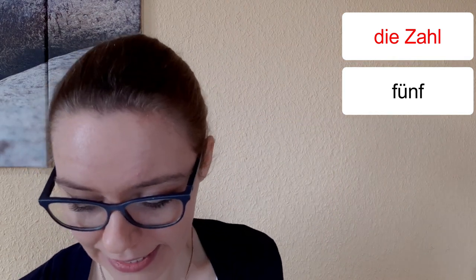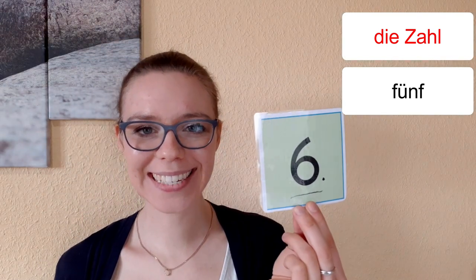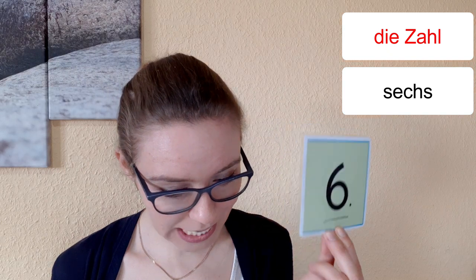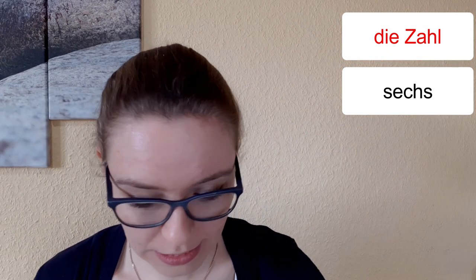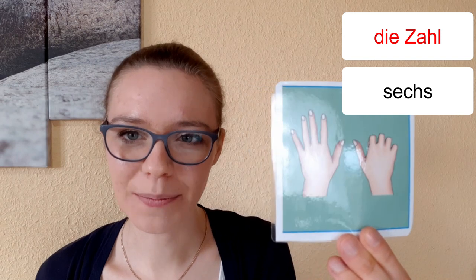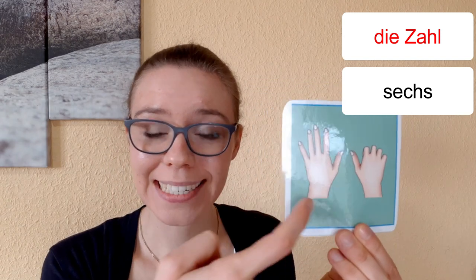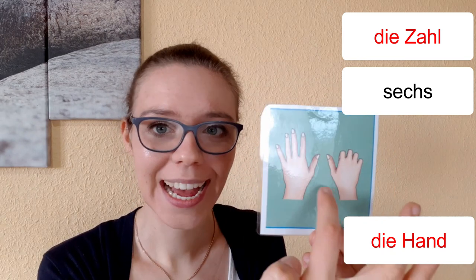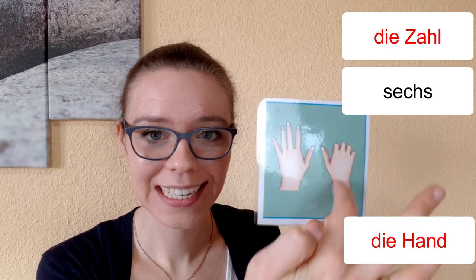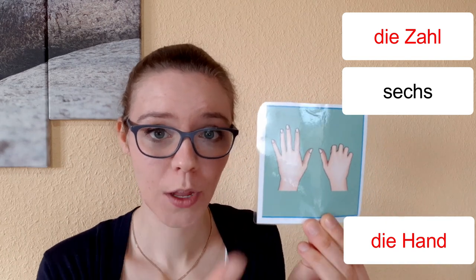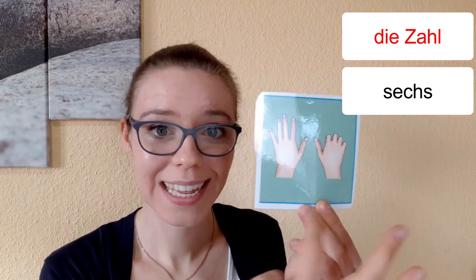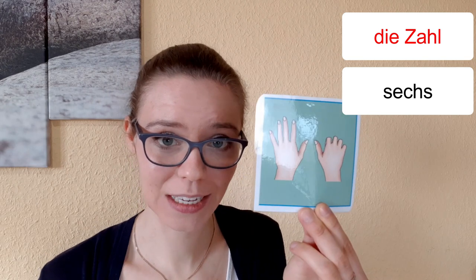Hier die nächste Zahl. Das ist eine Sechs. Die Sechs. Und wir haben auch sechs Finger. Wo sind die sechs Finger? Hier. Sechs Finger. An dieser Hand sind es fünf Finger. An dieser Hand ist es ein Finger. Fünf Finger. Ein Finger. Und sechs Finger. Sechs Finger.